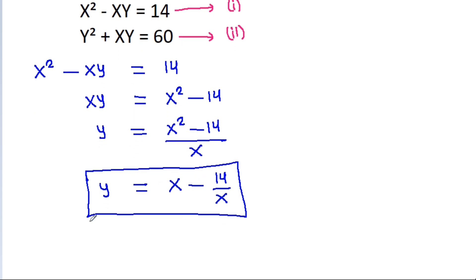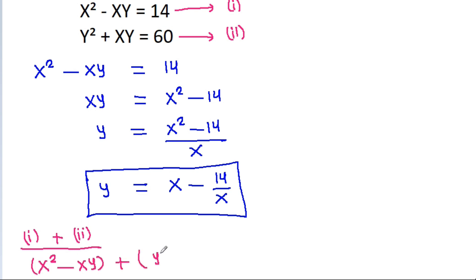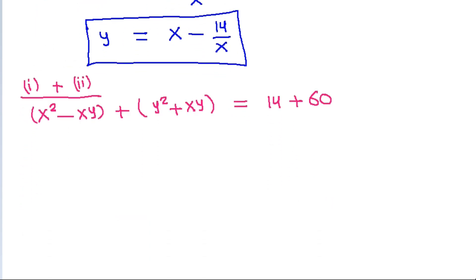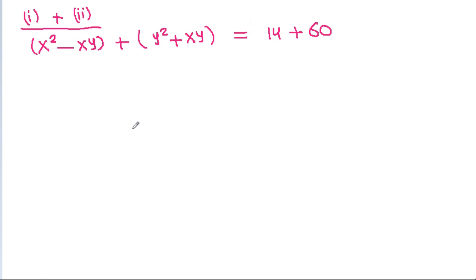If we add equation 1 and equation 2, then x squared minus xy plus y squared plus xy will be equal to 14 plus 60. The xy terms cancel, and x squared plus y squared is equal to 74.